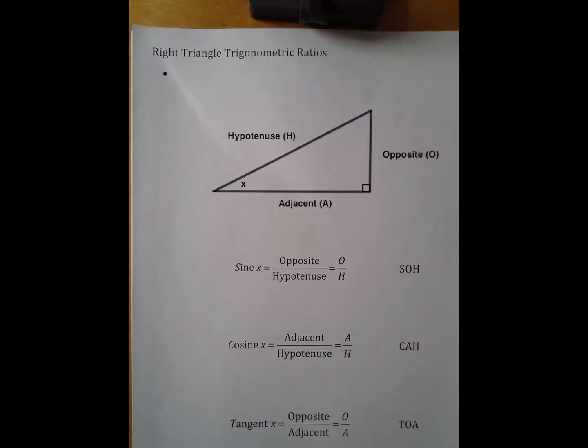These are the notes on the right triangle trigonometric ratios. The first thing we need to talk about when discussing the trig ratios is defining the names of the sides of the triangle that we're going to talk about.